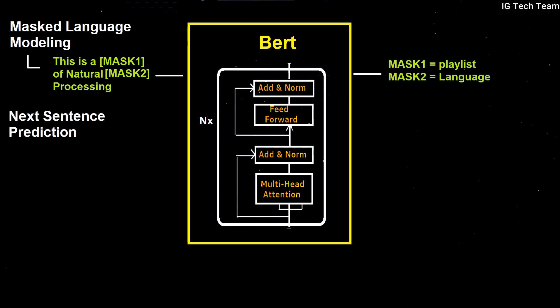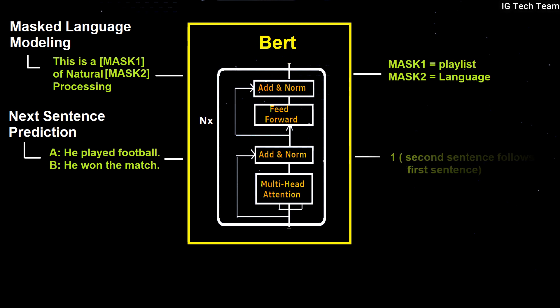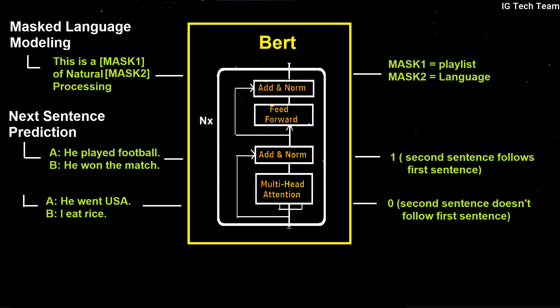In next sentence prediction, BERT takes two sentences. The task of BERT is to identify whether the second sentence actually follows the first sentence or not. If it follows, it returns 1; otherwise it returns 0. During training, 50% of the inputs are pairs where the first sentence is followed by the second sentence, and the other 50% are random sentences taken from the corpus. Masked language modeling is used to understand the relation between words, whereas next sentence prediction is used to understand the relation between sentences.